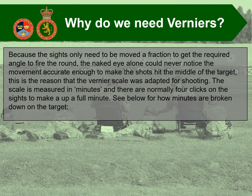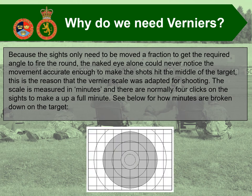The scale is measured in minutes and there are normally four clicks in the sights to make a full minute. The minutes are broken down on the target — the grid squares on every scorecard are accurately calculated to determine the distance you're firing at. A minute is a fraction of a degree, and there are 60 minutes in a degree and 360 degrees in a full circle. So we're talking about really minuscule fractions of an angle.